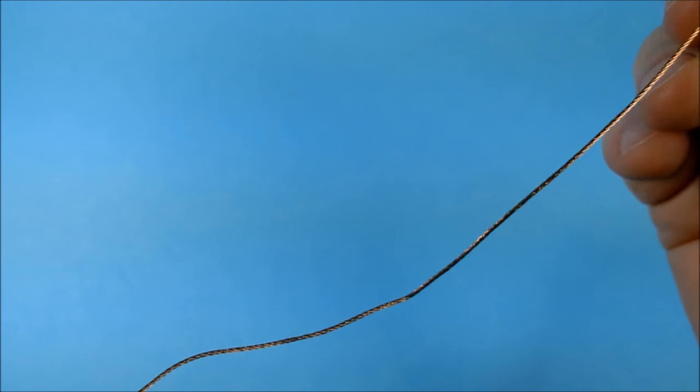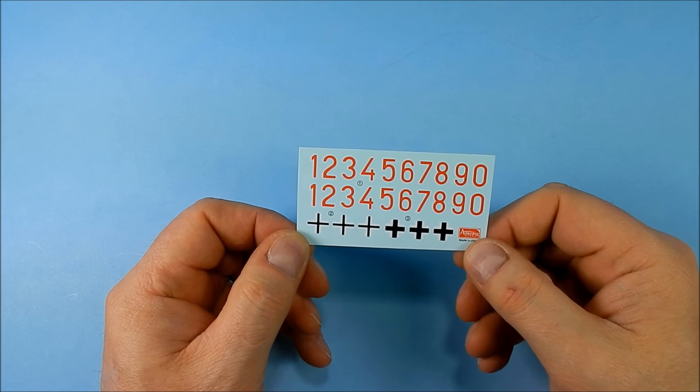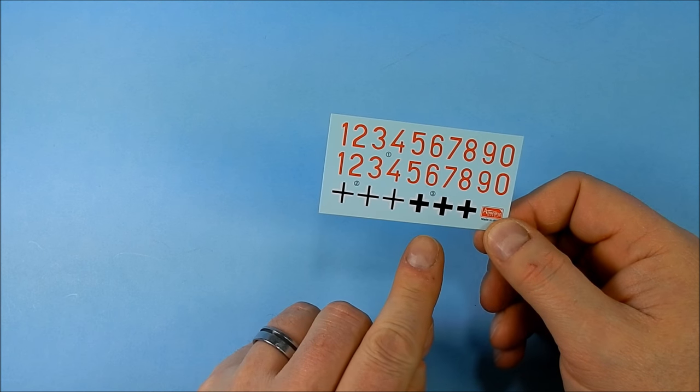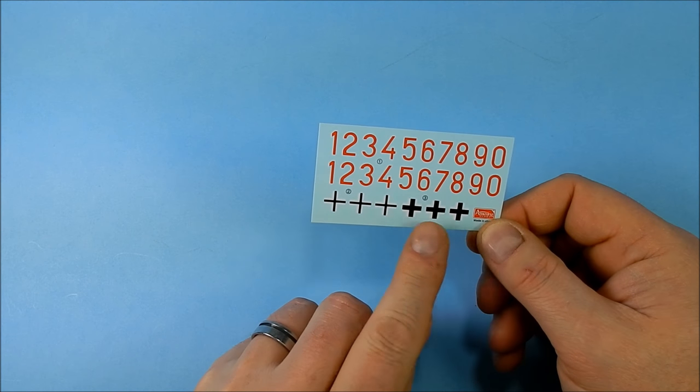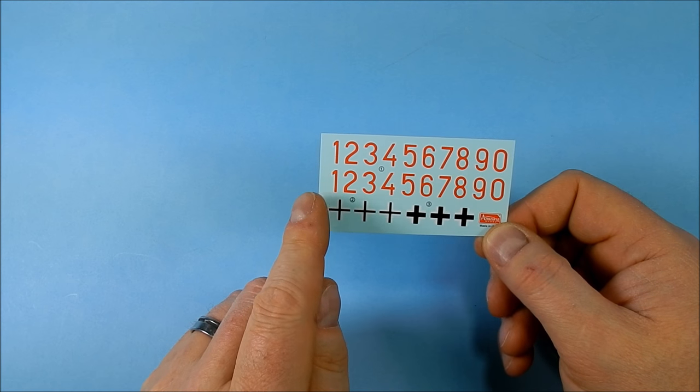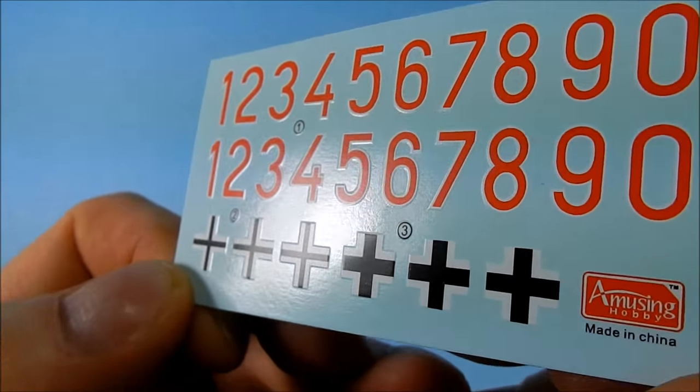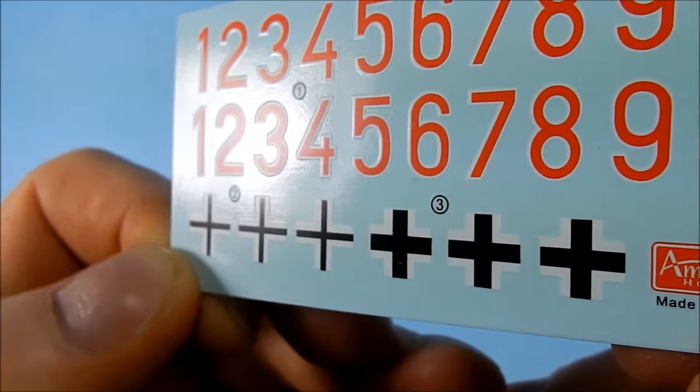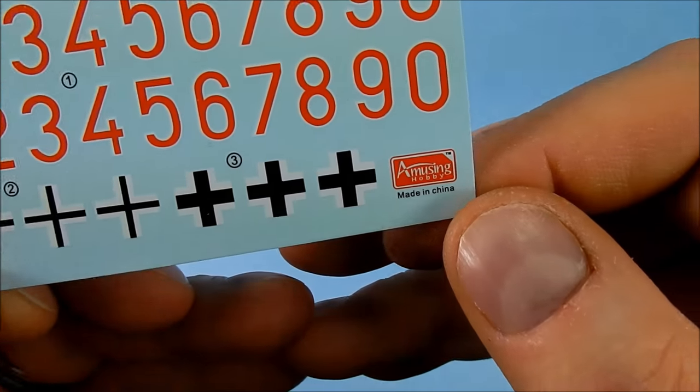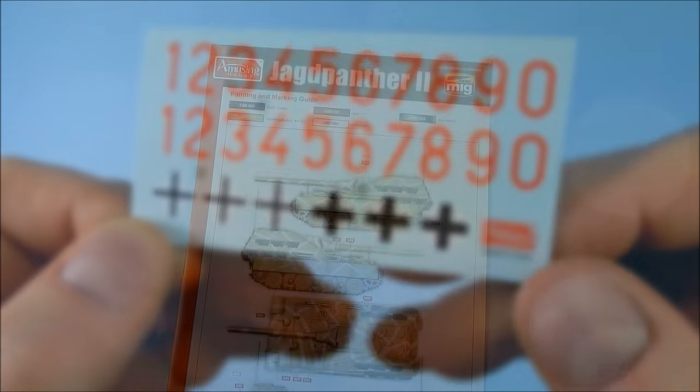And this is the decal sheet. So you get two styles of crosses, register seems to be pretty good, and numbers one through zero in white outlined red numbers. They look fairly thin not too too bad, no idea who actually prints these but they look all right.